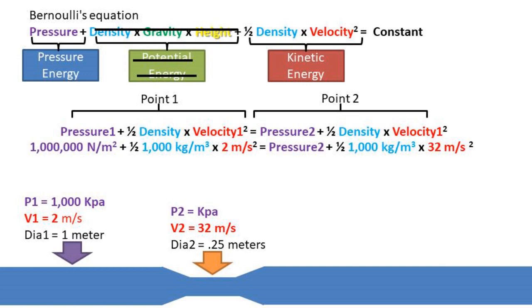For example, 1000 kilopascals should be converted into pascals or newtons per meter squared, density should be in kilograms per meter cubed, and velocity should be in meters per second.